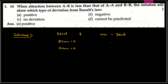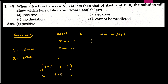Non-ideal solution mein delta V mix and delta H mix non-zero hote hain. A is the solvent and B is the solute. In ideal solution all A-A, A-B and B-B interactions are equal, but in non-ideal solution they are not equal. Agar A-B ki concentration kam ho jaaye compared to A-A and B-B interactions, ya agar A-B interactions ki force of attraction zyada ho jaaye, then it will show negative deviation.